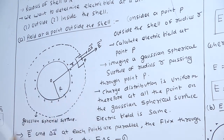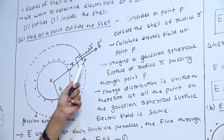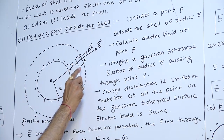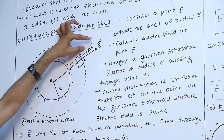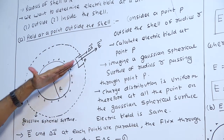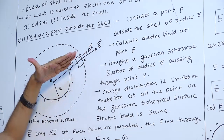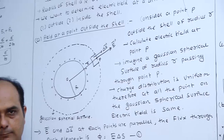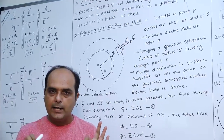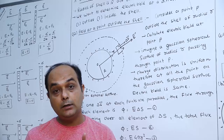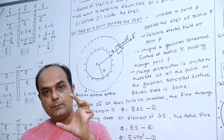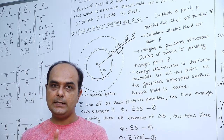We calculate the electric field at point B outside the shell. The Gaussian surface is divided into small area elements delta S, normal to the surface. The electric field is radially outward, so vector E and vector delta S are in the same direction. Therefore, flux phi equals vector E dot delta S, equation 1. By using this and Gauss's Law, phi equals Q by epsilon-zero, we can derive the electric field E.